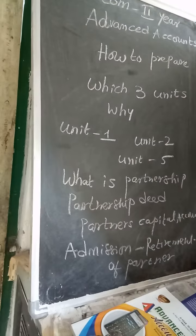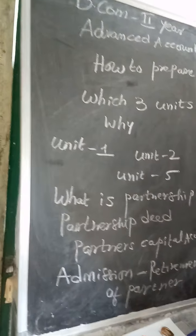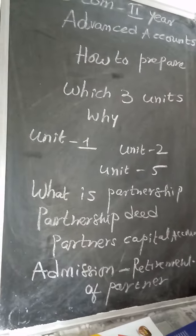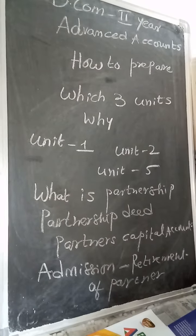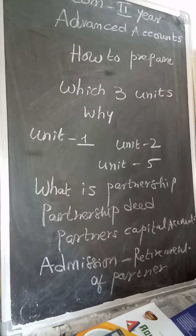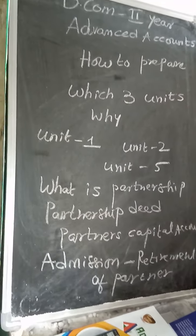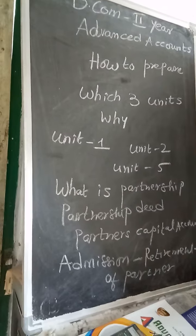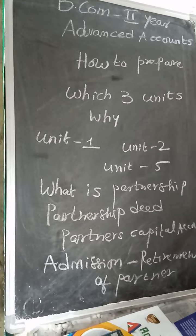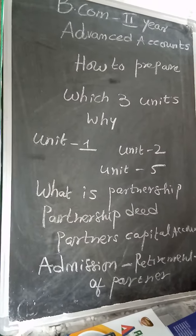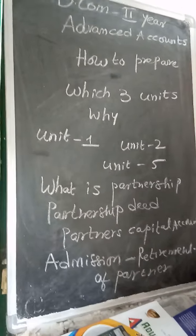The common element in both admission and retirement is the revaluation account. A revaluation account is a nominal account — you debit all expenses and losses, and credit all incomes, profits, and gains. Whatever revaluation profit or loss results is distributed to the partners. In the case of admission, the new partner will introduce some extra amount by way of goodwill, which may be created in the books or brought in as cash.